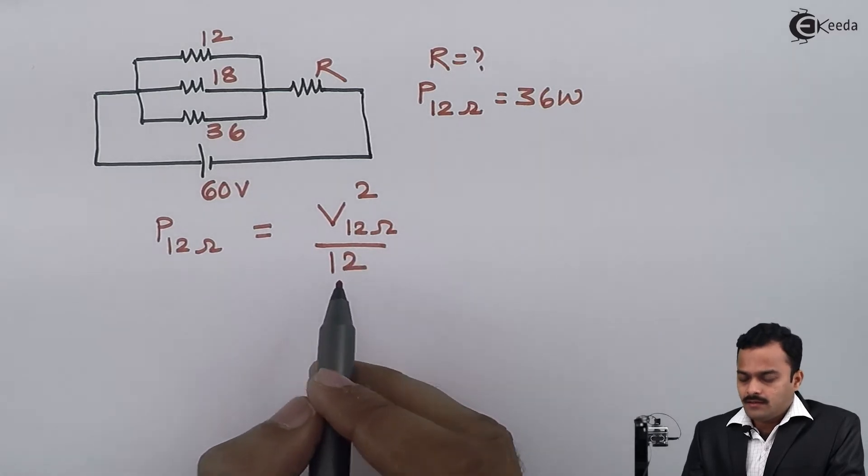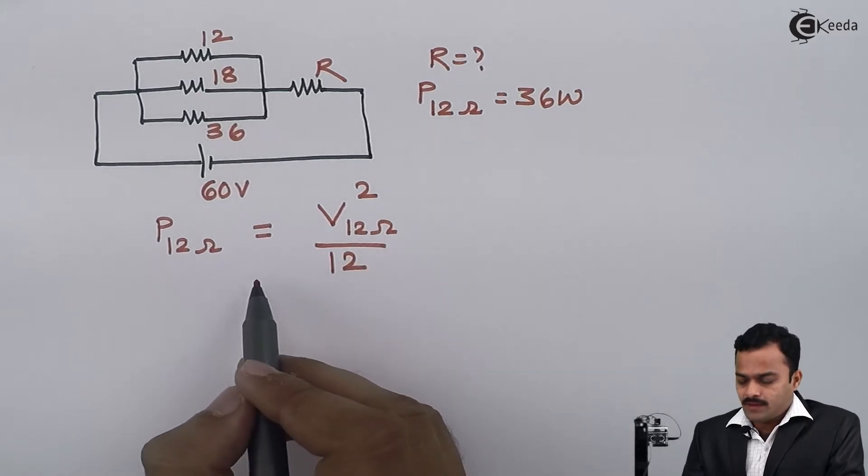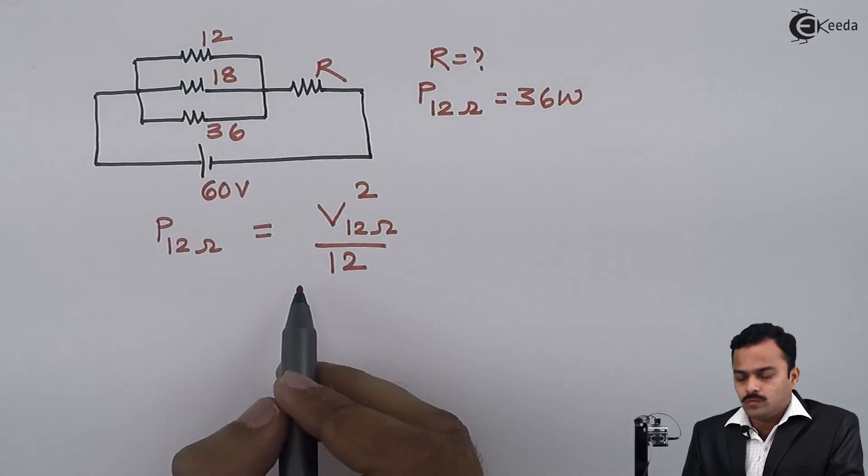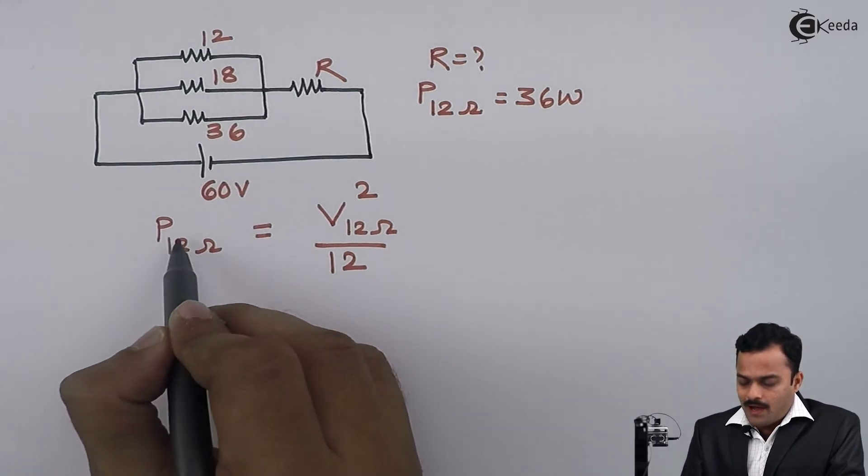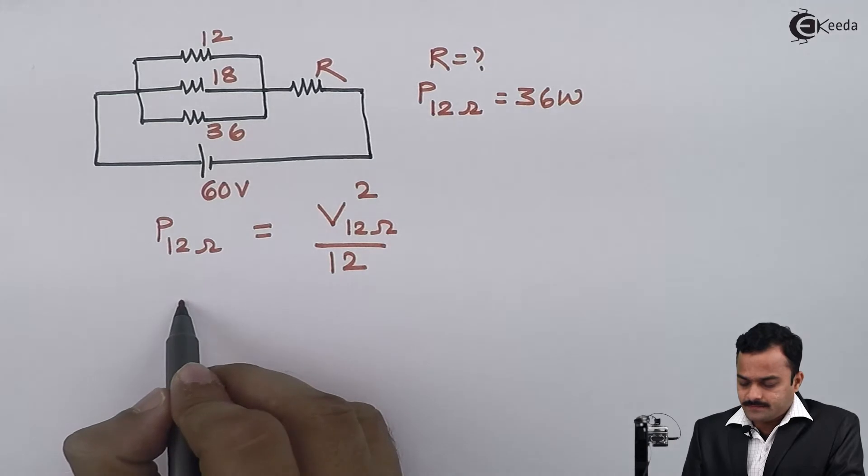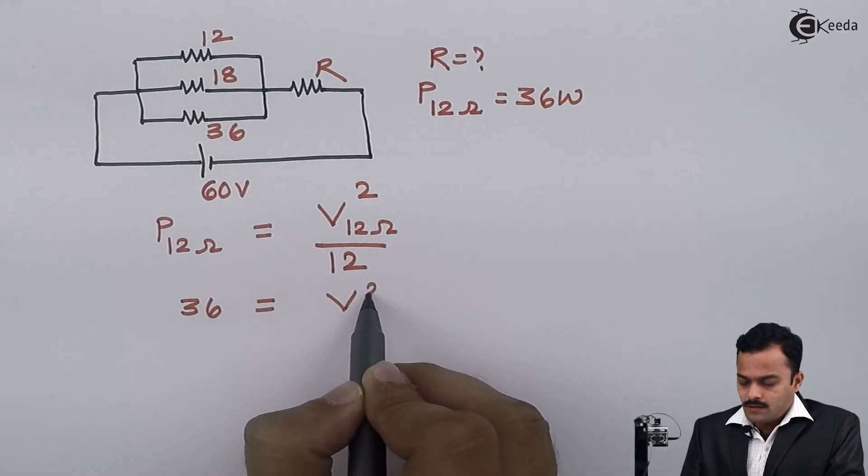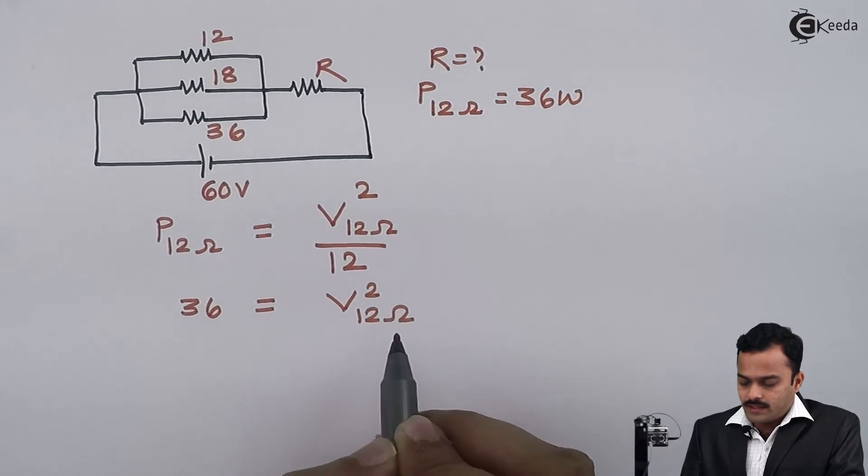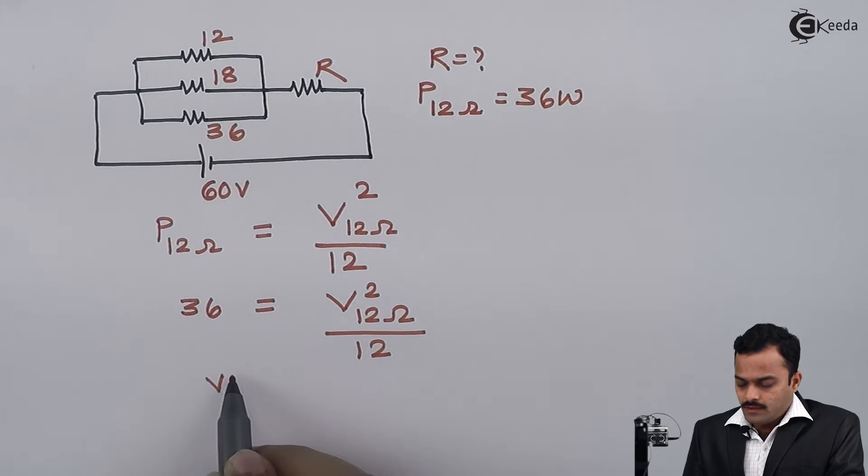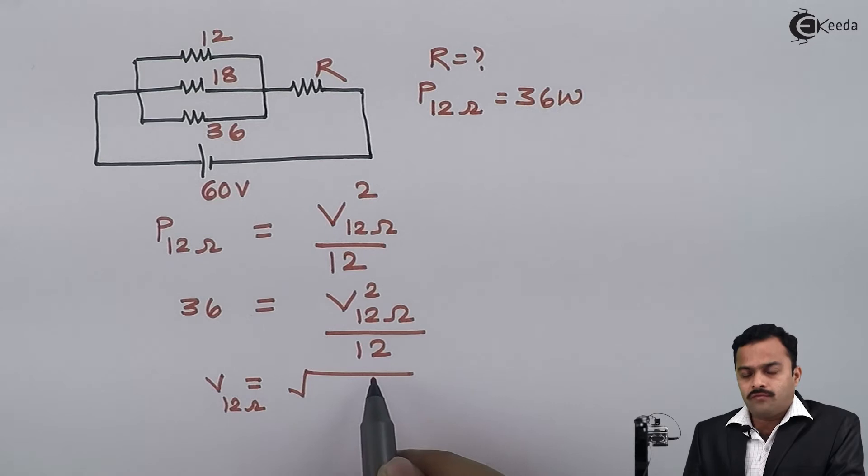I could use I²R also, but V²/R will give me the answer in fewer steps. Power consumed by 12 ohm is 36, so 36 equals V₁₂² divided by 12.